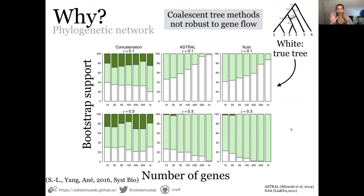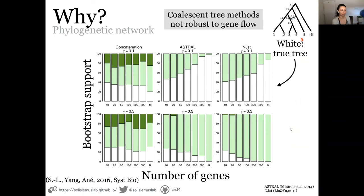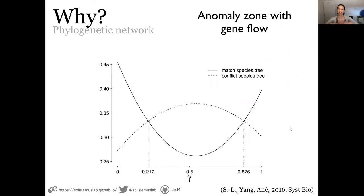Gene flow is distorting the signal from the data. What is really problematic is that there is no clear threshold for gamma. For this specific case we identify what is called the anomaly zone on gamma to be between 0.2 and 0.8, but this is very specific to the network topology and branch lengths used. Since the network and branch lengths are unknown, the anomaly zone is also unknown — we don't know if we fall within it, and we should not be using a tree method to estimate the main tree.